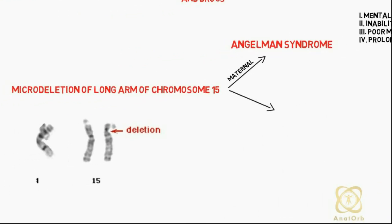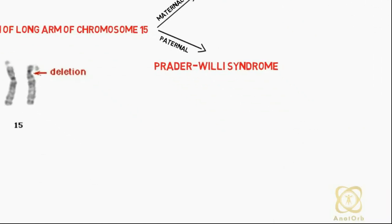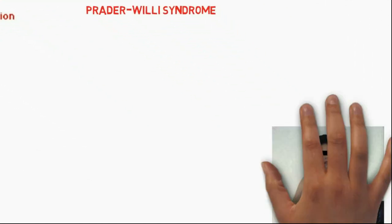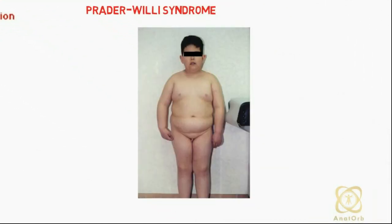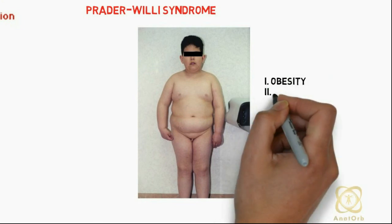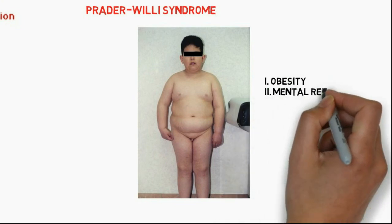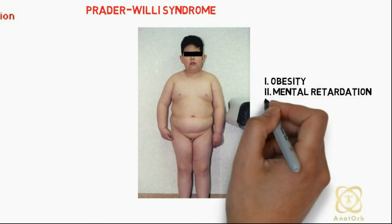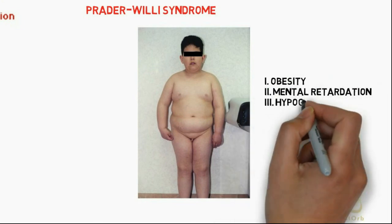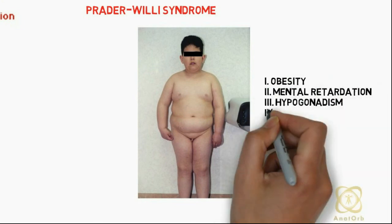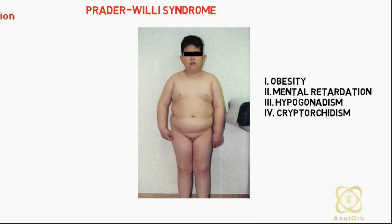On the other hand, if the defect is inherited on the paternal chromosome, it results in Prader-Willi syndrome. Affected individuals are characterized by obesity, mental retardation, hypogonadism, and cryptorchidism.